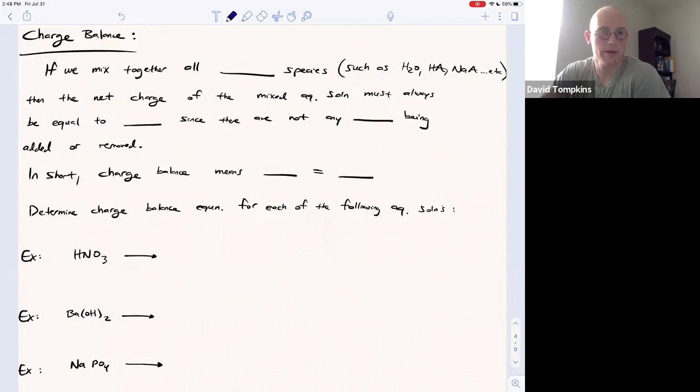In this lecture, I want to talk about the charge balance in the context of aqueous acid-base problems. If we mix together all neutral species, those with no net charge, even if they're made of ions, as long as the charges of the ions cancel, then the net charge of the mixed aqueous solution must always be zero.